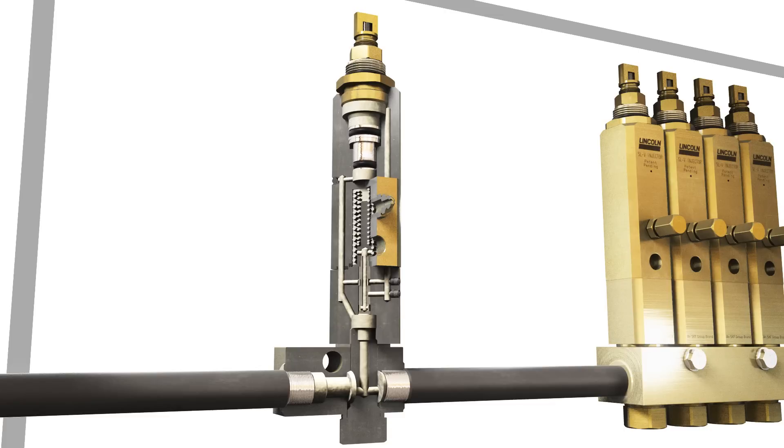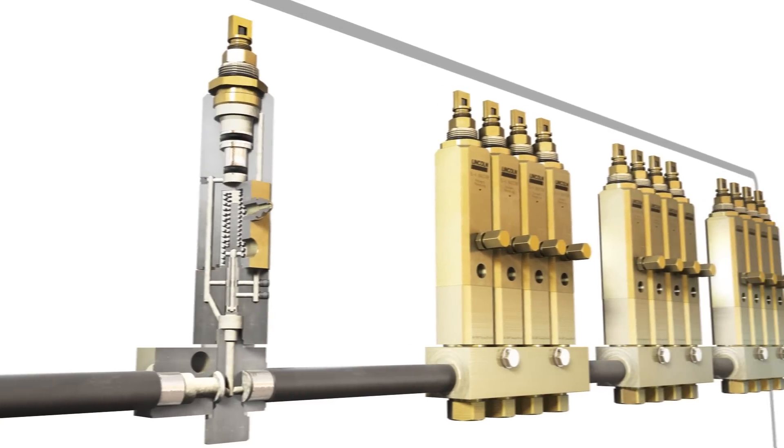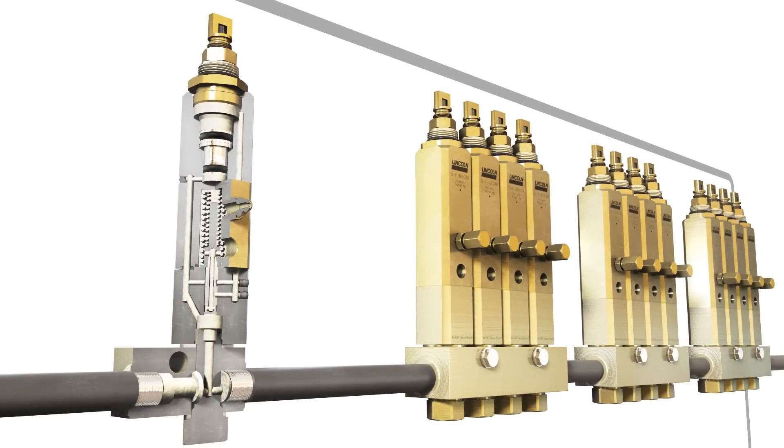Pressure remaining in the supply line is used to reset the injector for the next lubrication cycle. The resulting effect is to quickly drop the pressure in the supply line and assist the other injectors downstream in the system to reset for the next cycle.